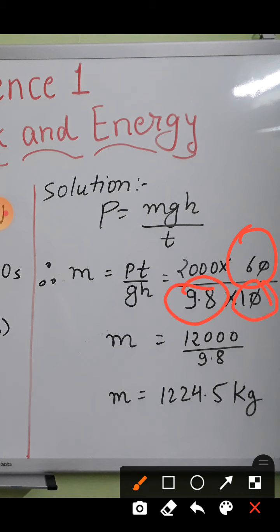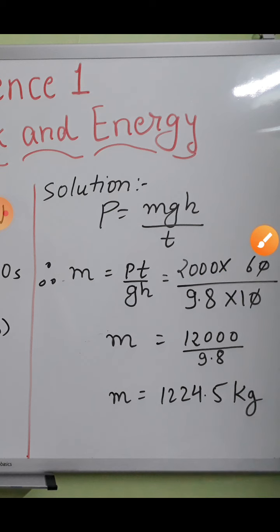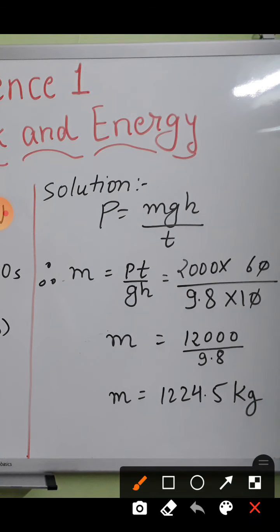Calculation part is very simple. This zero and zero will get cancelled, then 2000 into 6 will become 12,000, and 12,000 divided by 9.8. You can use calculator because calculator is allowed. Simply by dividing this you will get answer as 1224.5 kilograms.